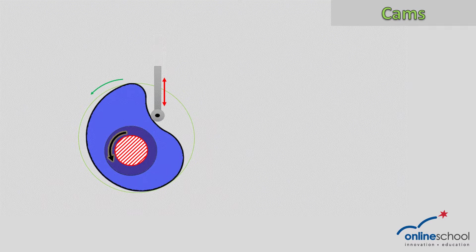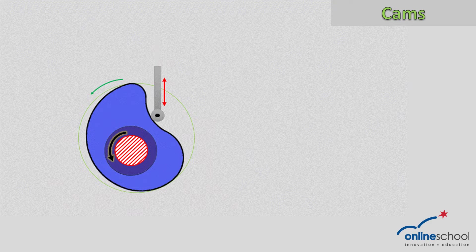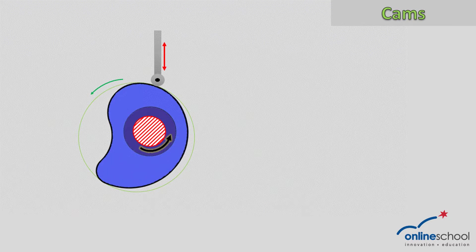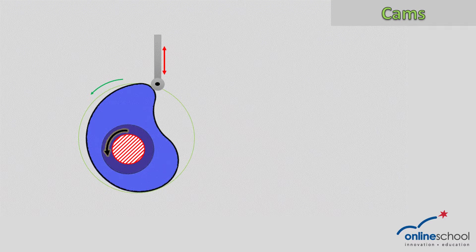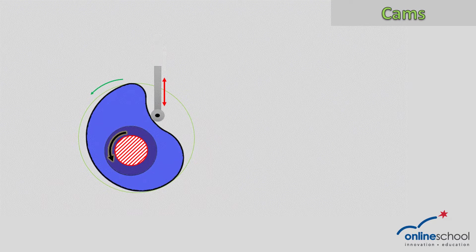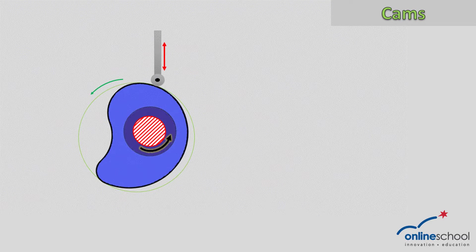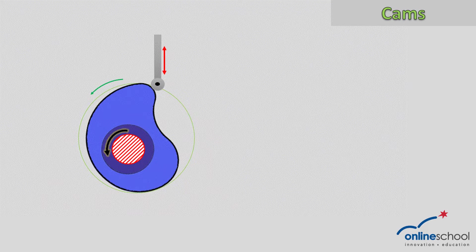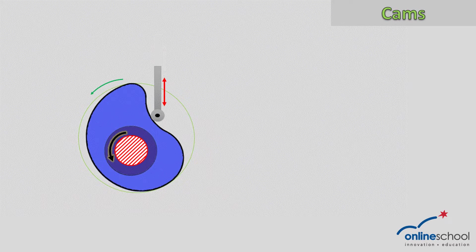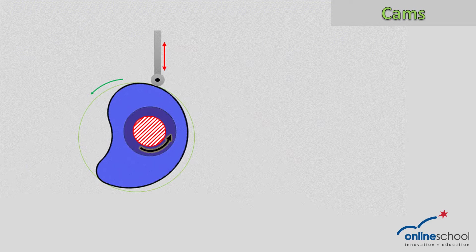Here is a short animation to illustrate the linear movement of the follower on the outer edge of the cam disc and this particular profile that this disc has. As you will see, the follower just moves up and down in a linear motion, and as this cam disc is turning on the shaft, we see that it is going in an anti-clockwise direction, although our follower is just following the path on the outer rim.